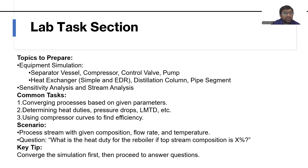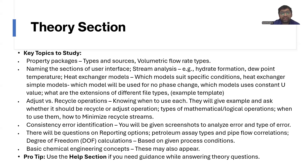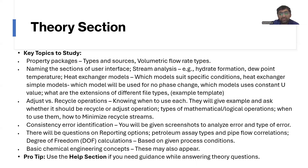These are the lab tasks they will give you to perform. For the theory section, key topics to study include property packages — types and sources — and volumetric flow rate types. You should know how to perform stream analysis, for example hydrate formation and dew point temperature, and you should also be able to name the sections of the user interface.